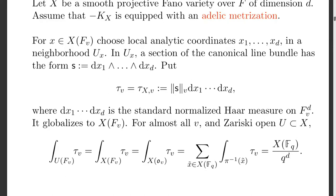The p-adic points of a projective variety are like integral points, and integral points you can reduce mod p. So now you have a finite sum. The integrals are all the same and give you just 1 over q to the dimension. So you've summed over all points mod p, and that's the answer. The first applications concerned, for example, Calabi-Yau varieties.